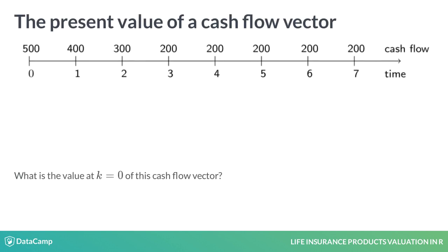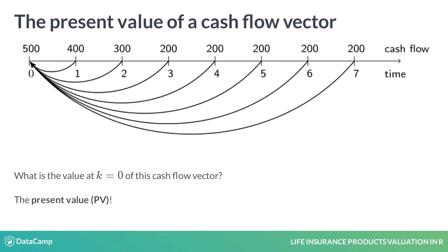Your goal is now to calculate the value at time zero of the cash flows on this timeline. The first cash flow, 500 euro, is at time zero and the last one, 200 euro, is at time seven. This value at time zero is called the present value. You find it by discounting each cash flow to time zero and then taking the sum.